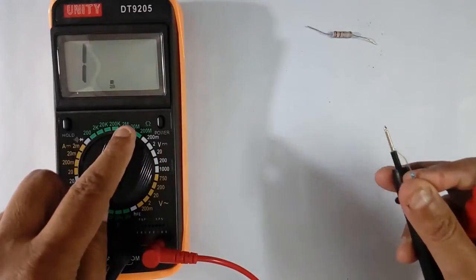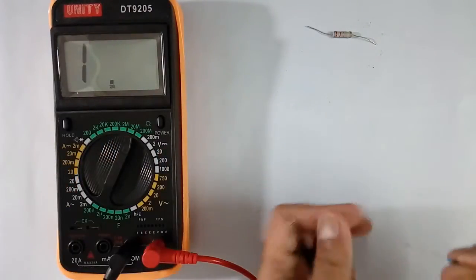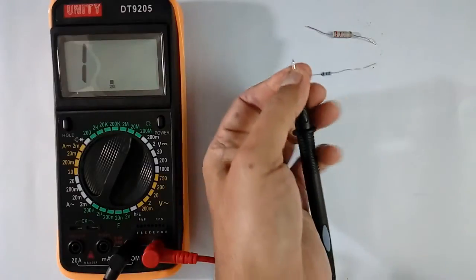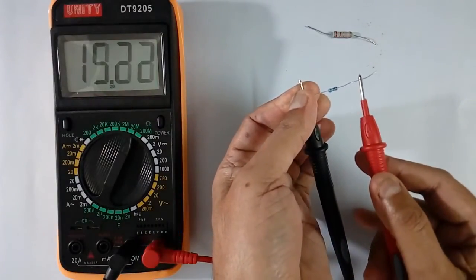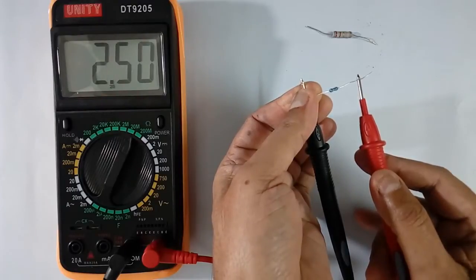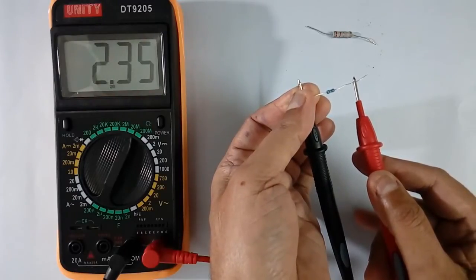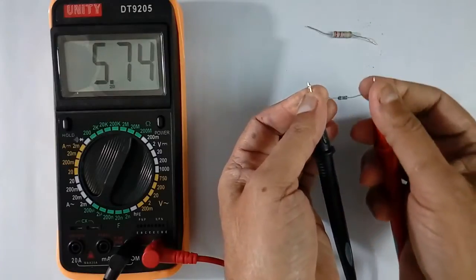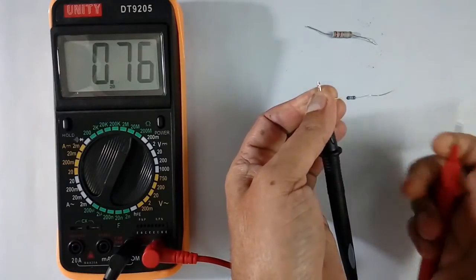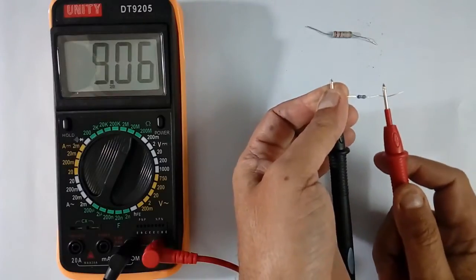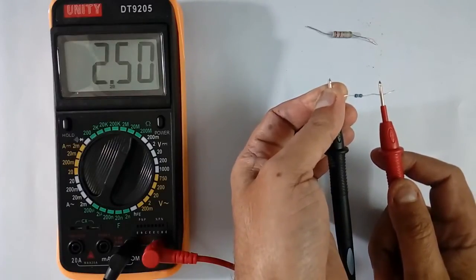I will set again scale of 20 mega ohms. One side we can touch the resistor. Other side we cannot touch. We have to keep like this. Then the correct value will come. It is showing 2.35. If we do like this, then body resistance also will come. It will show low value. It is giving error.